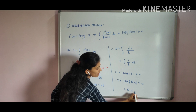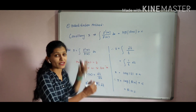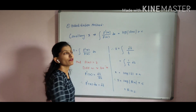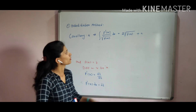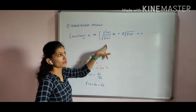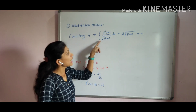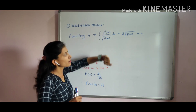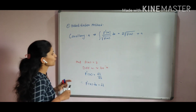This is our RHS. So if you have a function in the numerator that is the derivative of the denominator, then the integration is log of mod of that denominator plus c. The last corollary: the integration of f dash x upon the square root of f of x equals 2 times root of f of x plus c. If you have a root in the denominator and the numerator is the derivative of the function inside the root, the integral is 2 times that root plus c.